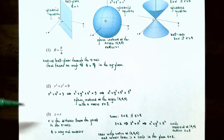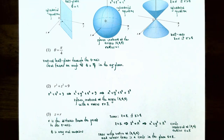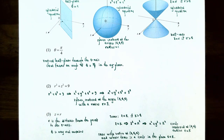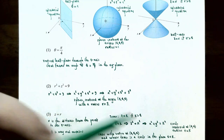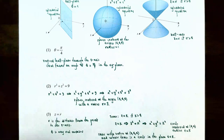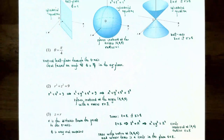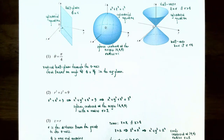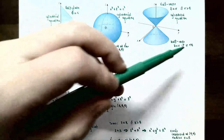Number three: the cylindrical equation z equals r. Here r represents the distance from the point to the z-axis, and theta does not appear, so theta can be any real number. If we let z equal k (with k positive) and square both sides, z squared equals k squared equals x squared plus y squared, which is a circle of radius k centered at the origin. This gives a cone with vertex at (0, 0, 0), where for positive r we have the upper half cone and for negative r we have the lower half cone.